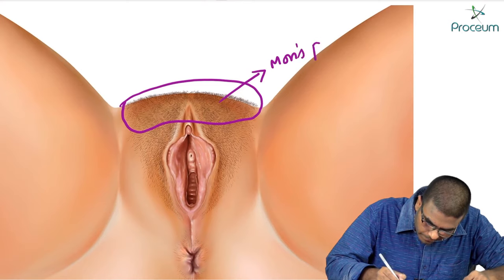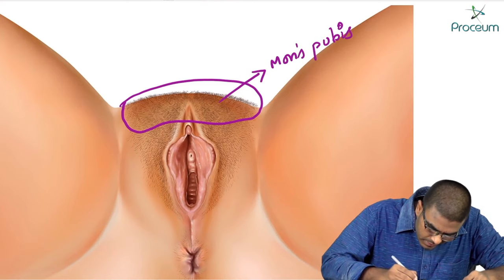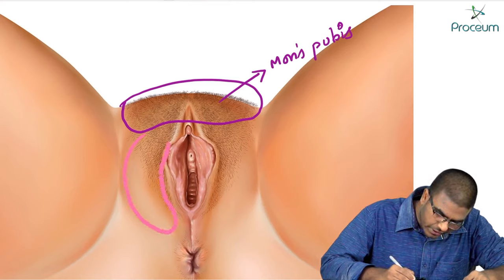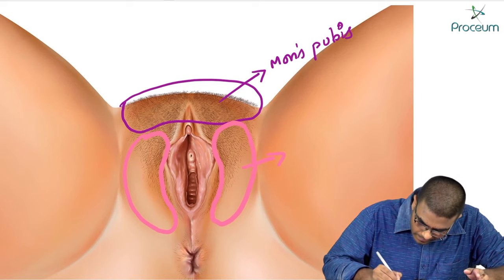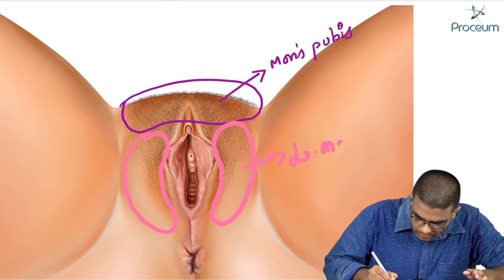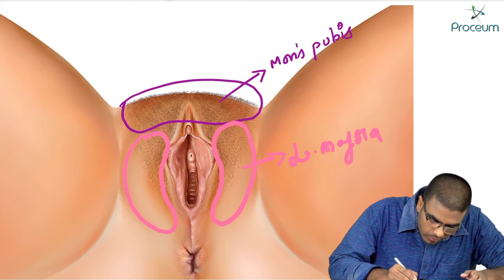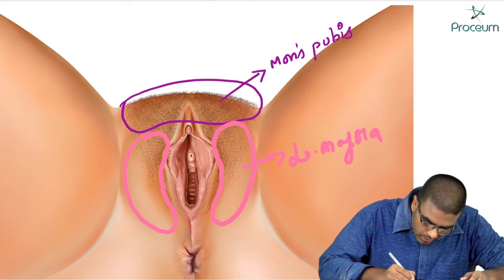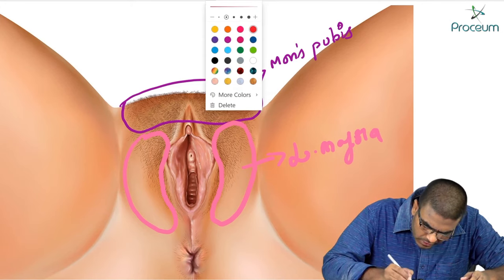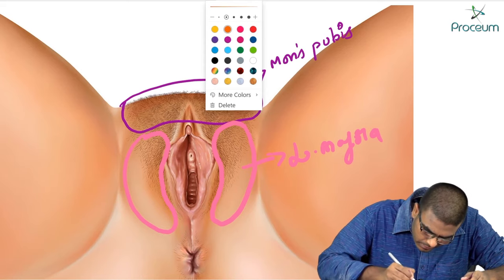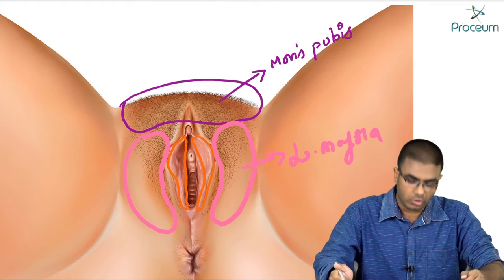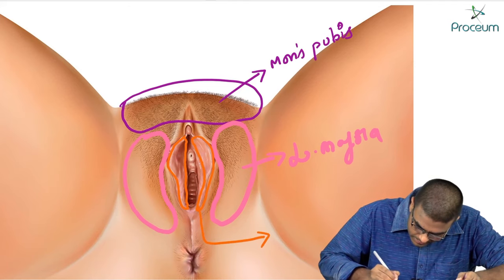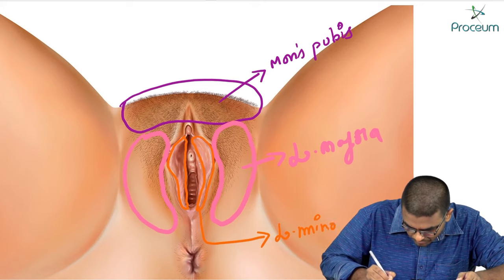These thick folds of skin which are present laterally are known as labia majora. Now, these thick folds of skin which are present medial to the labia majora — these folds are known as labia minora.